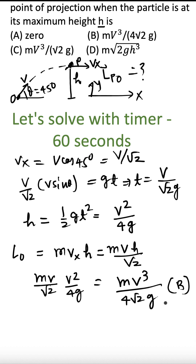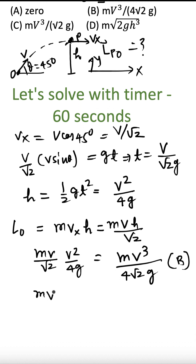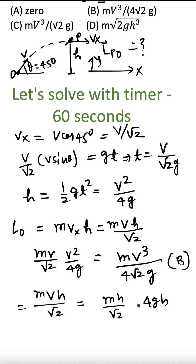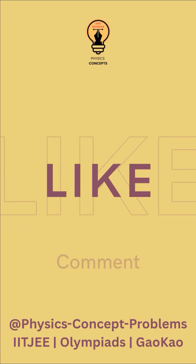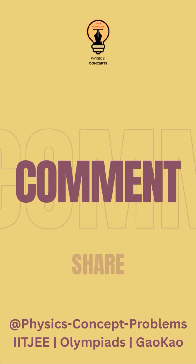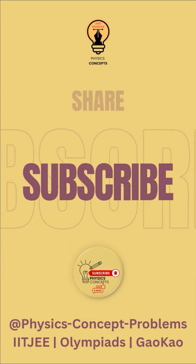But at the same time, in m·v·h/√2, if you replace v with its expression in terms of h — since h = v²/(4g), we get v = √(4gh) — then you get m·h·√(4gh)/√2, which gives m·√(2g·h³). Hence option D is the answer as well. I hope you liked this problem. Thank you very much. Subscribe and gain access to concepts and tips for doing better in IIT JEE or other examinations. Keep up the great work.